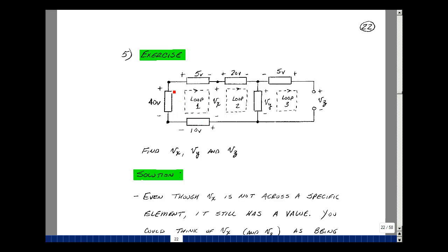Let me define this as loop number one. If I go around loop number one, I know everything but V sub x, so I could solve for V sub x. Around loop number two, I know everything except V sub y, and so I could solve for V sub y. And lastly, around loop number three, I would know everything but V sub z. So let's do that.